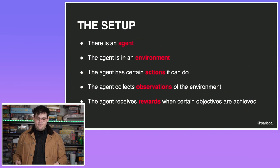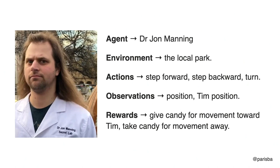In this kind of setup we can look at John again. The agent is Dr. John Manning, the environment is a local park. John can step forward or step backwards. His observations are his own position — he knows where he is on a spectrum of not-at-Tim to Tim. He gets a reward when he moves forward towards Tim, and his candy is taken away when he moves away from Tim. That's how our John agent works.